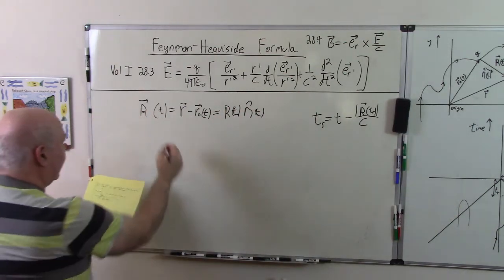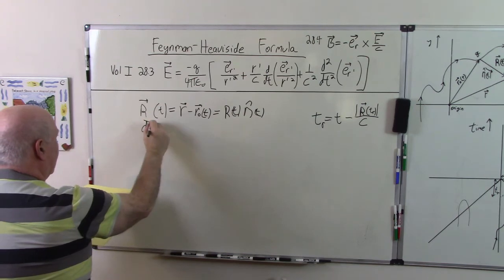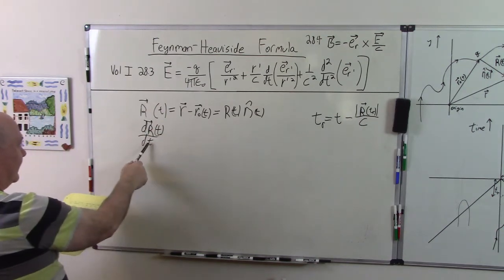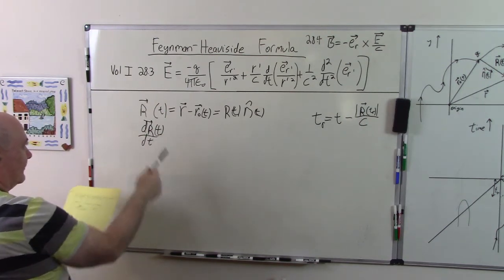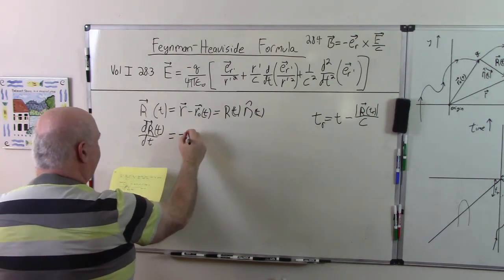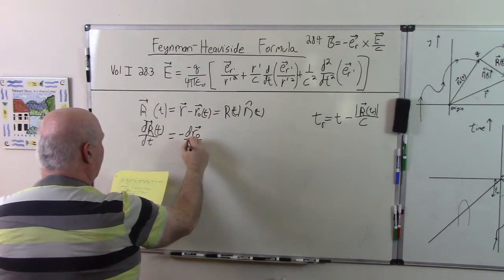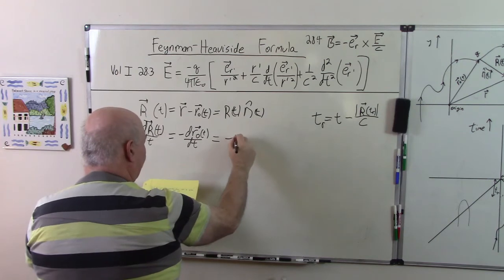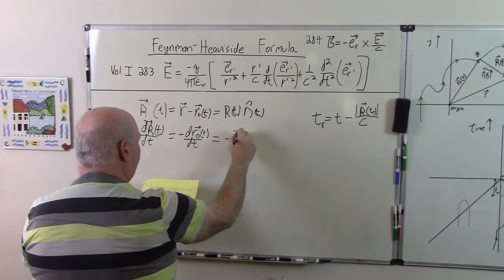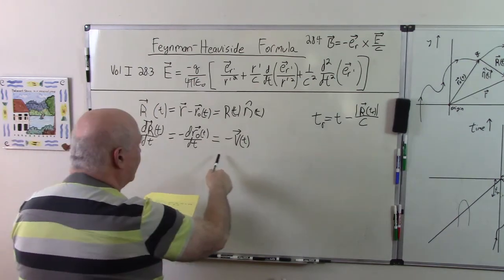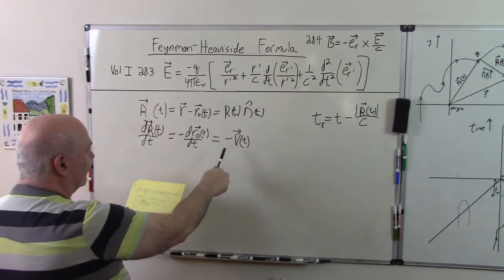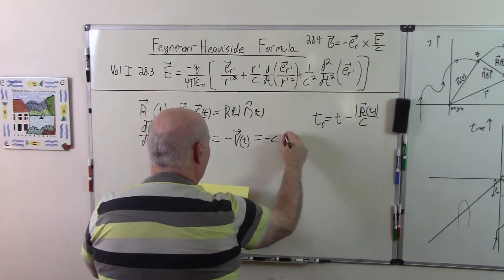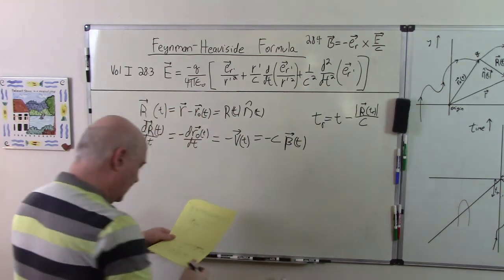And if I take a derivative, dr dt at time t, here notice I have the same, taken with respect to the same time both places, this is equal to minus dr zero dt and we'll call that minus the velocity vector because dr zero dt is just the velocity vector. Because of the way we've defined it from the charge to the observation point, we got a minus sign here, and this is also equal to minus c times beta of t.